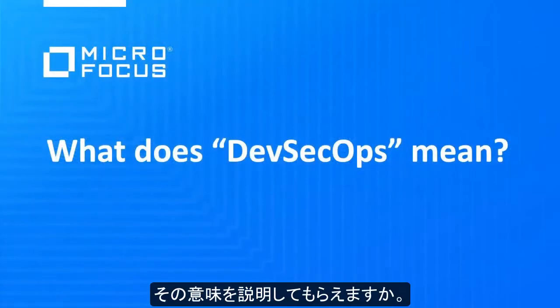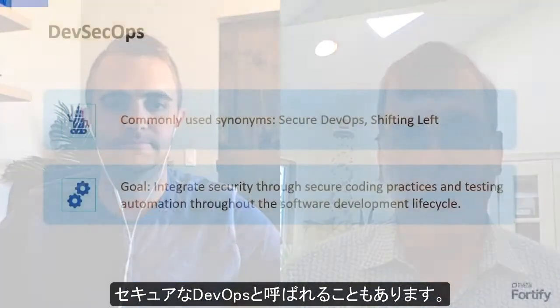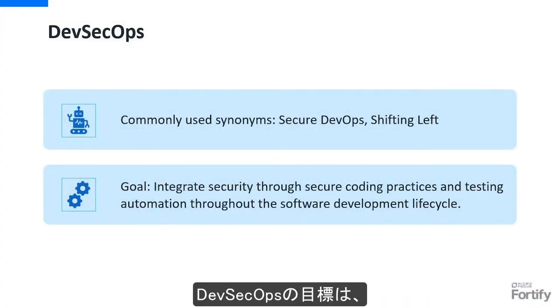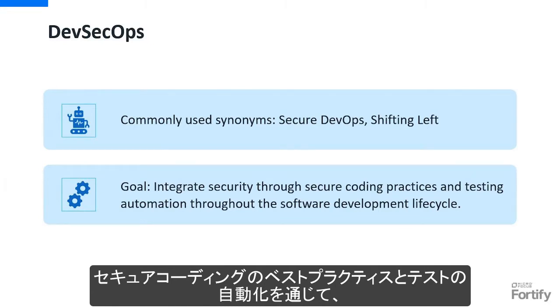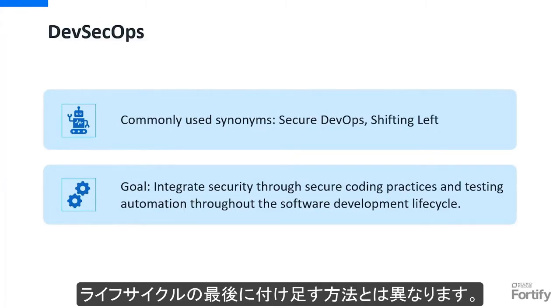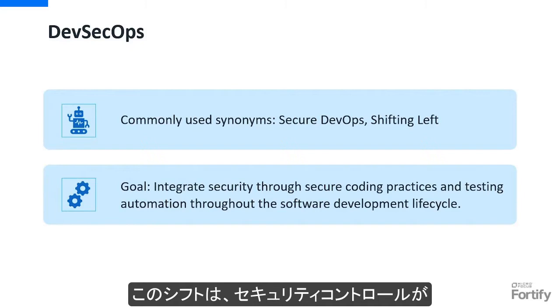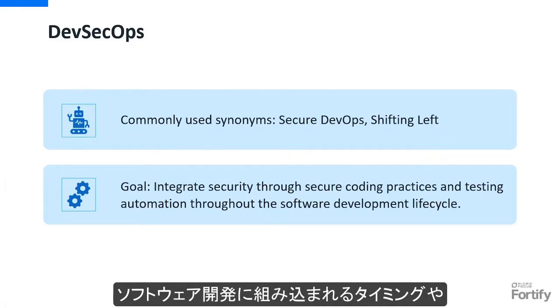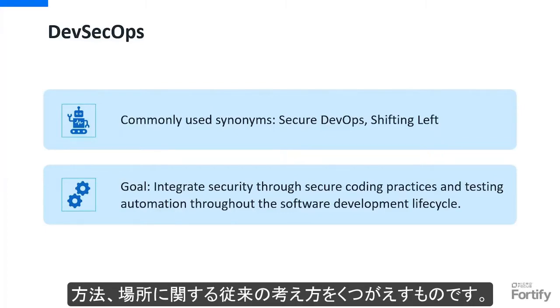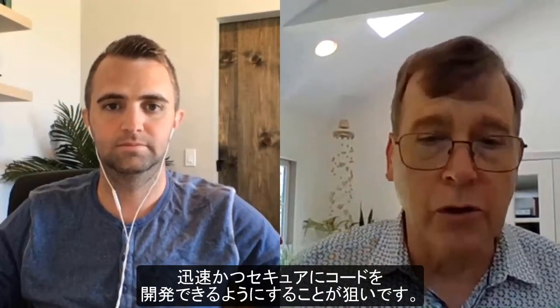Our topic today is DevSecOps. Let's start with a basic overview for those that haven't heard the term before. DevSecOps is an extension of DevOps and is sometimes referred to as secure DevOps. The goal is to make security part of the software development workflow with secure coding best practices and testing automation, rather than bolting it on at the end of the lifecycle. This is commonly referred to as shifting security left, which is upending traditional notions of how, when, and where security controls can be integrated, and challenging once-siloed groups to find ways to work together to develop rapid but secure code releases.